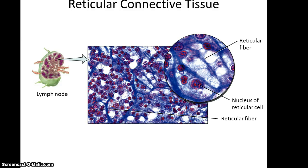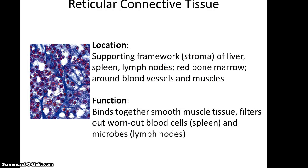Reticular connective tissue has little fibers that are branching out — in this image they're blue due to the dye stain, and the nuclei of the reticular cells are stained red. Reticular connective tissue is often found in the supporting framework of the liver, spleen, and lymph nodes, as well as in red bone marrow and around blood vessels and muscles. Its functions include binding together smooth muscle tissues and acting as filters that filter out worn-out blood cells in the spleen and microbes in the lymph nodes.